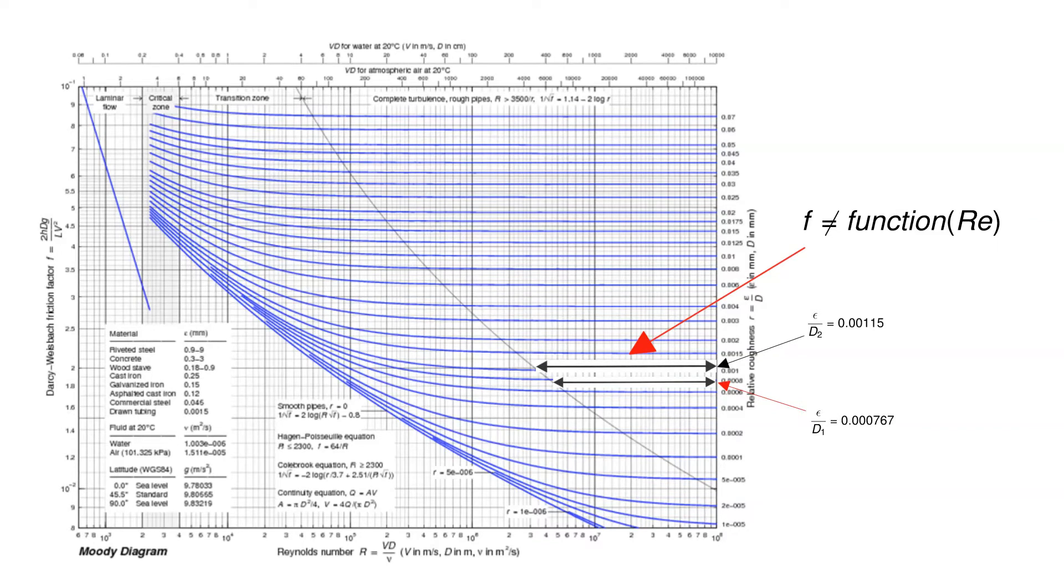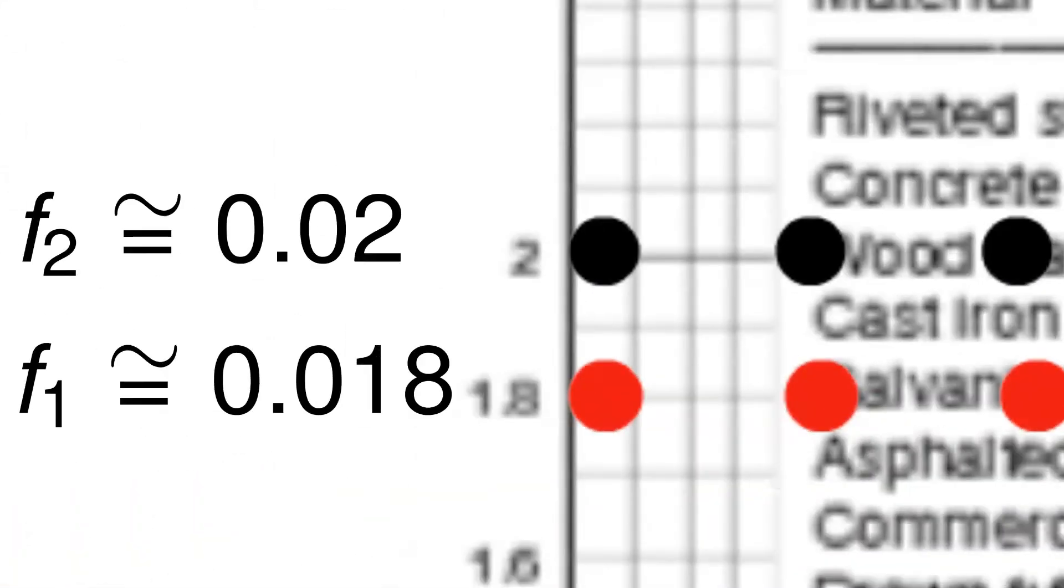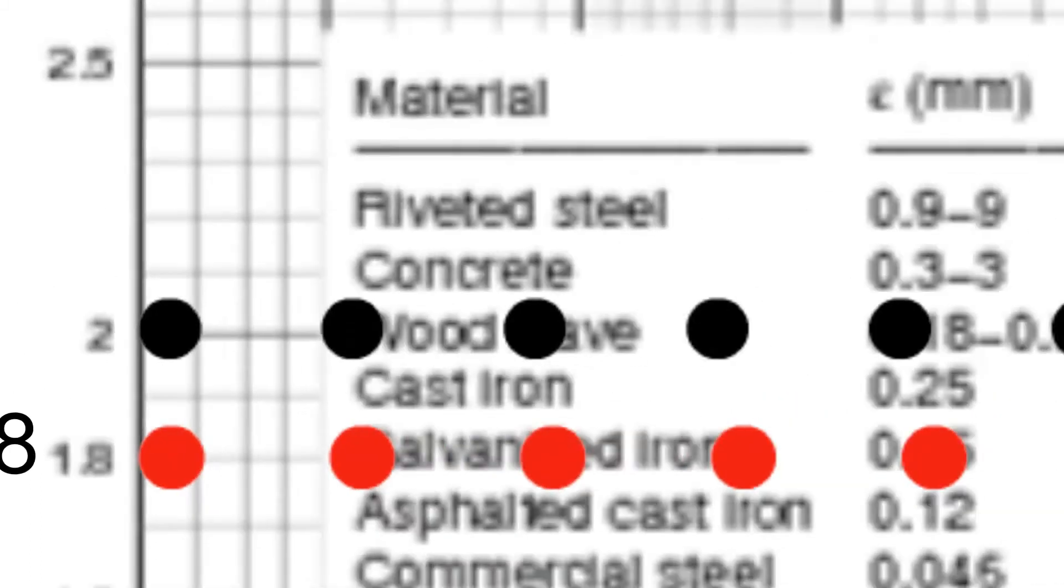We will have to check and verify that these guesses are reasonable but hopefully this approach will minimize the number of necessary iterations. The dotted lines indicate our initial guesses for F1 and F2. We read the values for the friction factors off of the left axis. F2 is approximately 0.02. F1 is approximately 0.018.